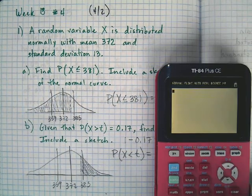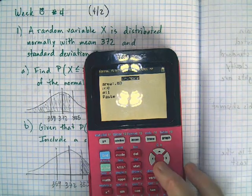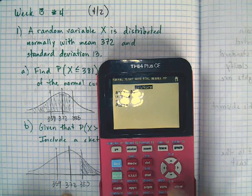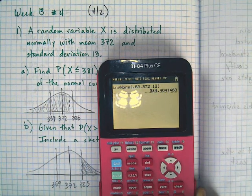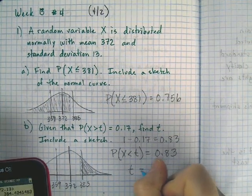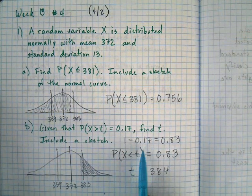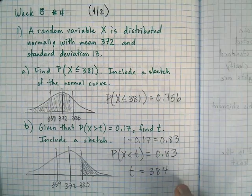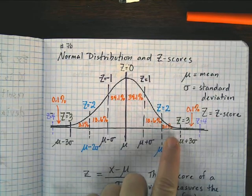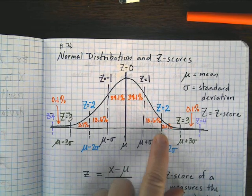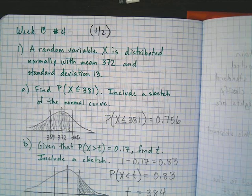So here we go. Back to our graphing calculator. This time I'm going to do the inverse function. My area is 0.83, my mean is 372, and my standard deviation is 13. Hit enter a bunch of times, and I get 384. Look at that, T is equal to 384. And so it was actually super close to that 385, which makes sense. Because 17%, if I looked at my notes on my percentages on my normal curve, if I have 13.6 plus 2.1, that's 15.16%. It was going to be really close to the first standard deviation. So it actually really makes sense that that's where it would be. So that was yesterday's warm-up.